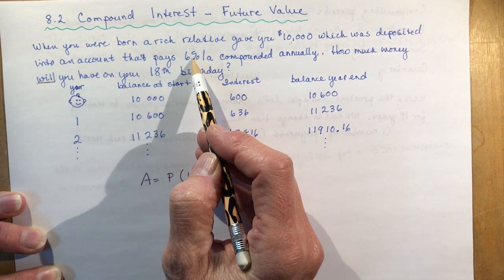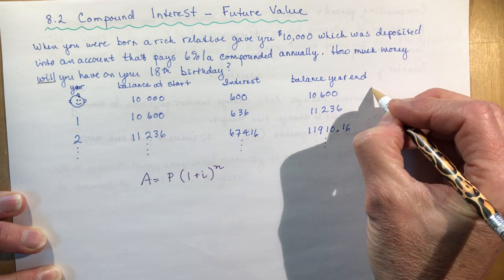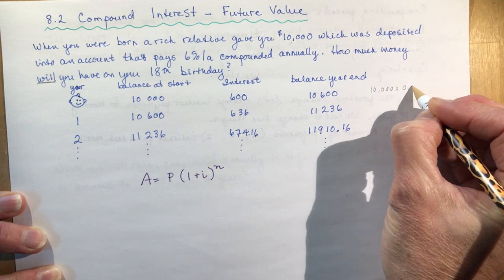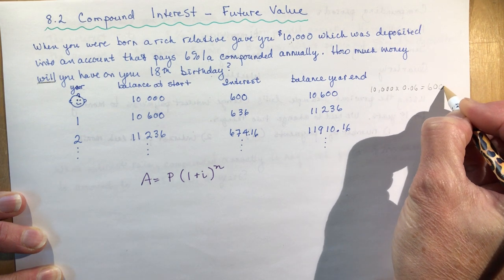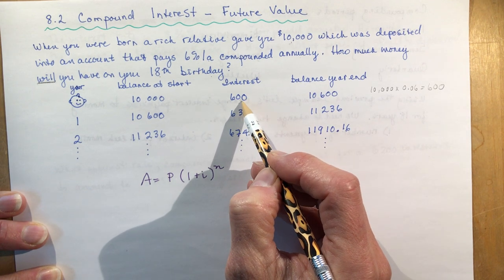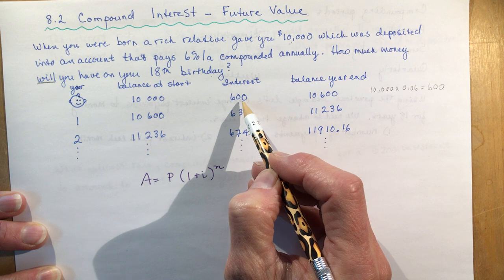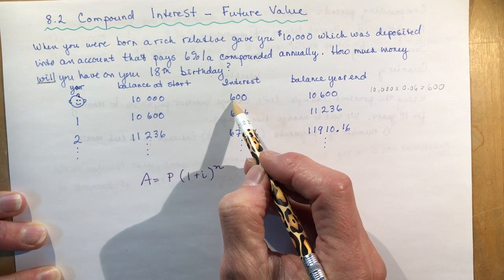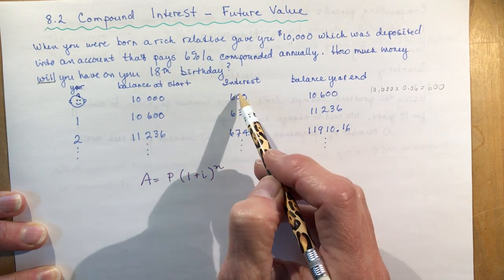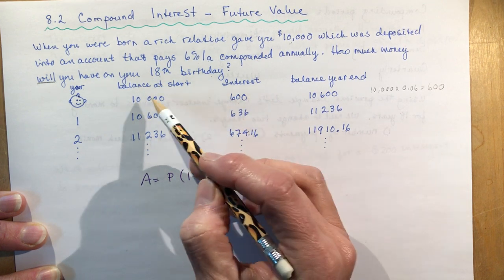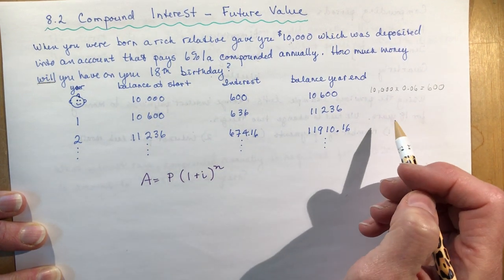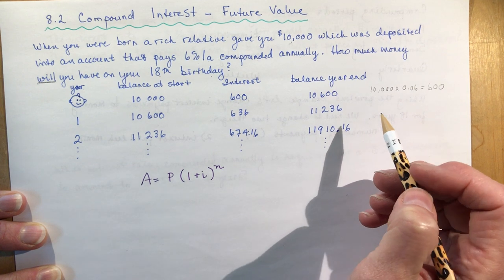If you're getting 6% interest, you're getting 10,000 times 0.06, which is $600. So after one year — that's like simple interest — you got $600. If this was a simple interest question, you'd just say you got $600 every year for 18 years, multiply those together and add them to your $10,000. But compounding interest is much better for you if you're putting money into a bank.